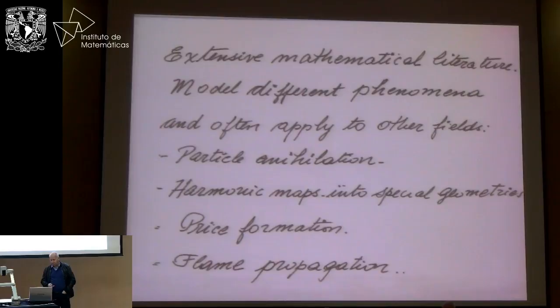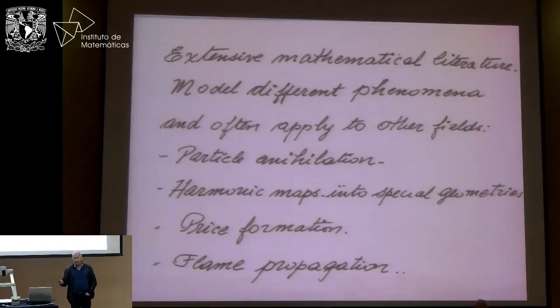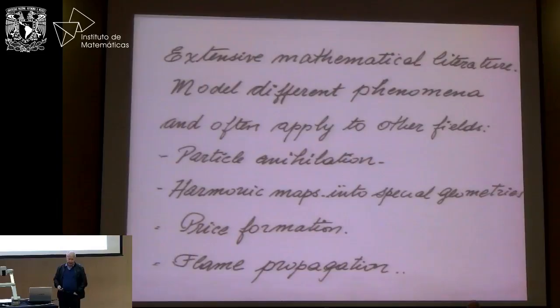Some examples of price formation where there are sellers and buyers, and there is some gap between what one wants to get and what one wants to pay. Problems like flame propagation are also the same type. There is an ignition temperature, and when you are below it, you have some gas flowing, and when you are above, it flows at a higher temperature. There is a transition surface where this type of behavior plays.